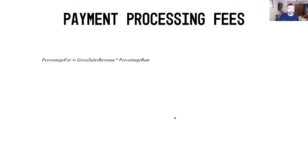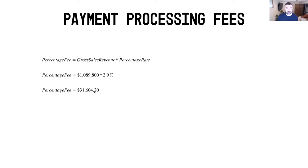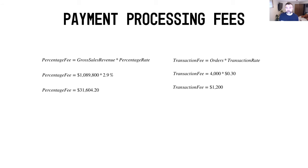Let's take a further look at the math. Starting on the percentage fee side: gross sales revenue times the percentage rate. We take $1,089,800 times 2.9% to arrive at $31,604.20 in your percentage fee. Similarly, on the other side of the equation, you've got orders times the transaction rate. Taking our 4,000 orders multiplied by $0.30 yields a transaction fee of $1,200. To get your total payment processing fees, you add the two together: $31,604.20 plus $1,200 equals $32,804.20.